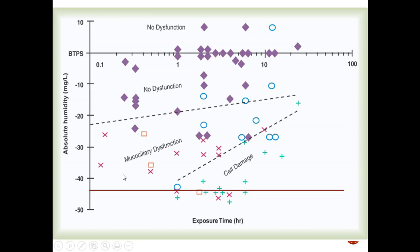Looking at Egan's graph, at a body humidity deficit of 10, there's not really any dysfunction. At 20, still looking all right. As you get higher you start to see mucociliary dysfunction, cell damage, and tissue damage. With a 44 mg/L deficit — the worst-case scenario just described — all of the bad things are happening. This graph helps put into perspective what we're talking about when we discuss body humidity deficit.